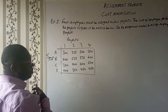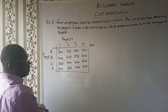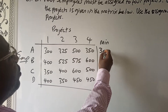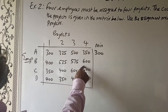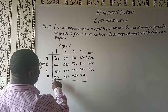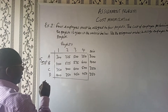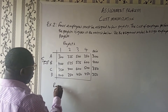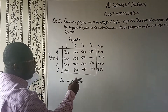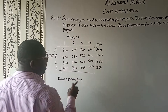The first thing we do in the row operation is to identify the minimum of each row. The row operation involves deducting the minimum from itself and all the other members of the same row.